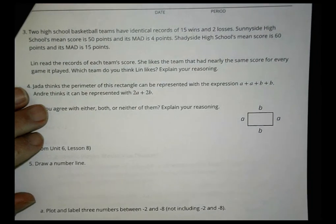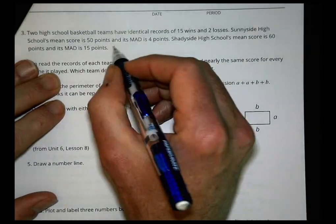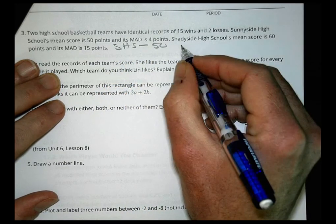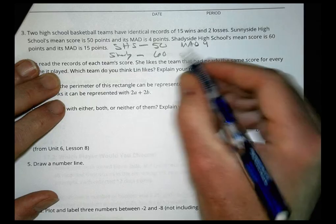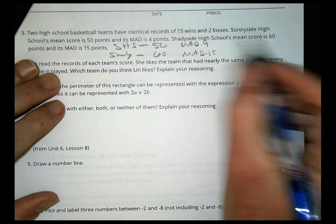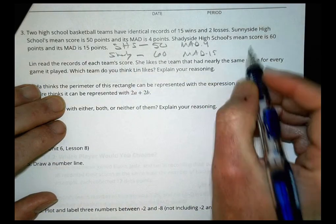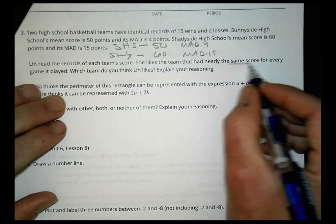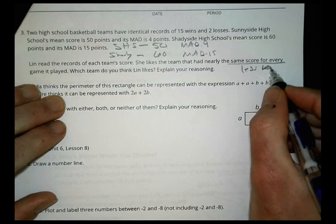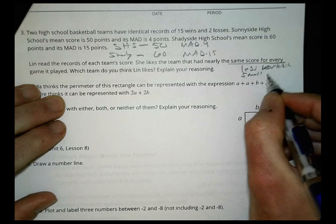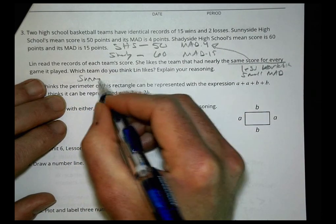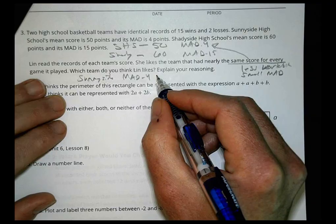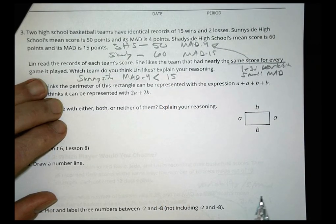Number three: two high school basketball teams have identical records of 15 wins and 2 losses. Sunnyside High has a mean score of 50 and a MAD of 4. Shadyside has a mean score of 60 and a MAD of 15. Lynn likes a team that had nearly the same score for every game it played — she wants less variability, which means she wants a small mean absolute deviation. The one with the least deviation is Sunnyside, with a MAD of 4, which is less than Shadyside's 15.